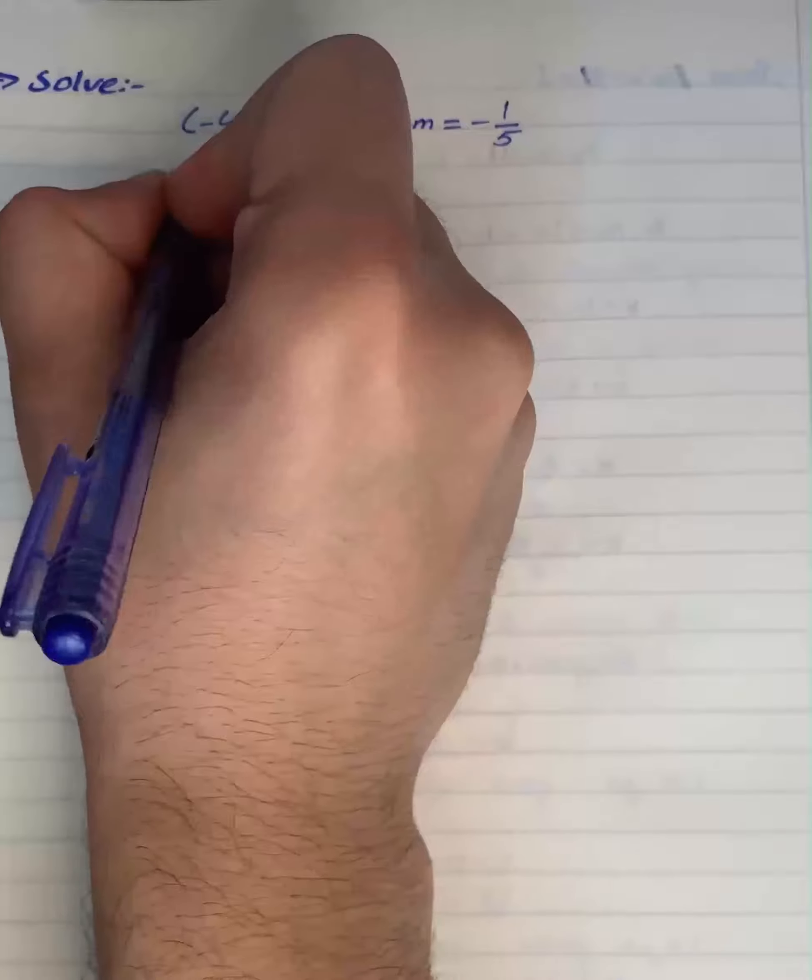The result will be 2 equals 7 + K, then K equals -5. So here we have our value for K.